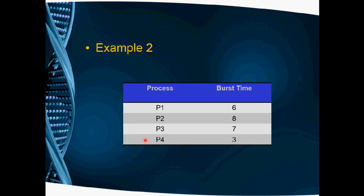So now we will see a non-preemptive SJF example. Here we have 4 processes: P1, P2, P3, and P4 with burst times of 6, 8, 7, and 3 milliseconds respectively. In SJF, the process with the smallest burst time executes first. So P4, with burst time 3, will execute first.